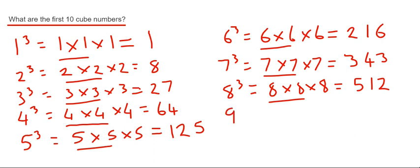Nearly there, 9 cubed. So 9 times 9 times 9. Again, work out 9 times 9 first of all, that's 81. Times that by another 9 will give us 729.